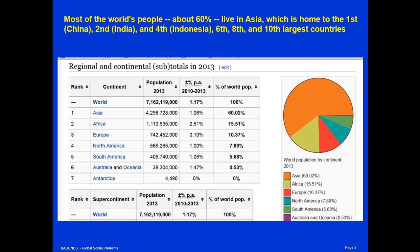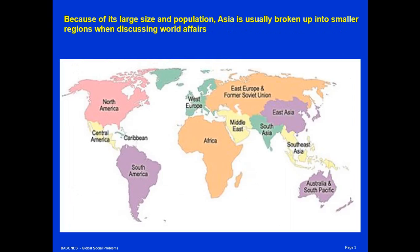For example, most of the world's people — about 60% — live in Asia, which is home to the 1st, 2nd, 4th, 6th, 8th, and 10th largest countries in the world by population. In fact, Asia is so big that when we discuss regions of the world, we usually divide Asia into several sub-regions. Each of those sub-regions — for example, East Asia centered on China, and South Asia centered on India, Pakistan, and Bangladesh — may be larger in population than entire continents like North America or Africa.